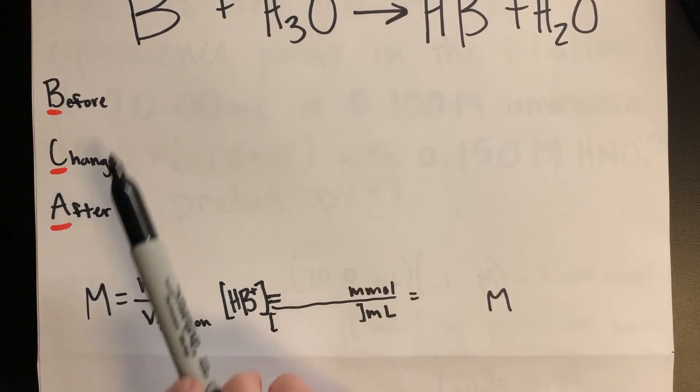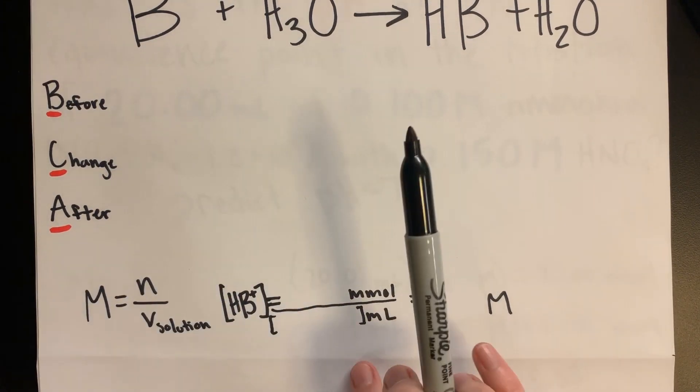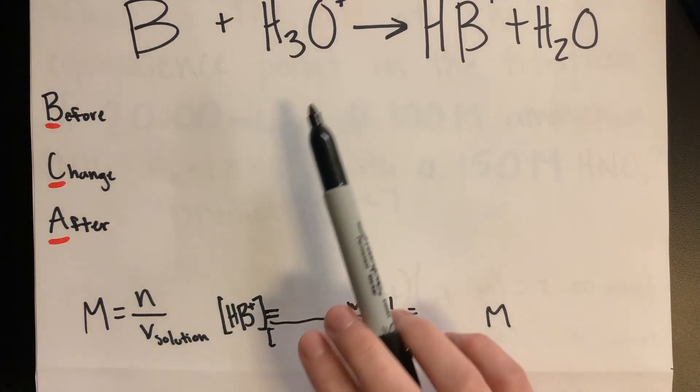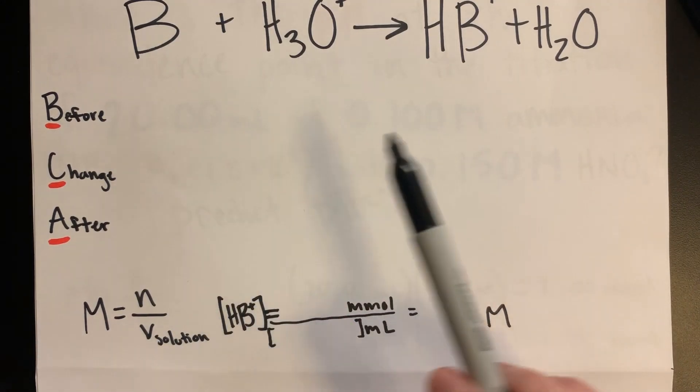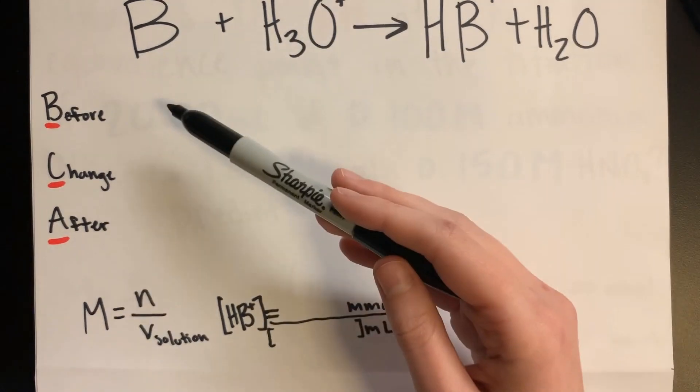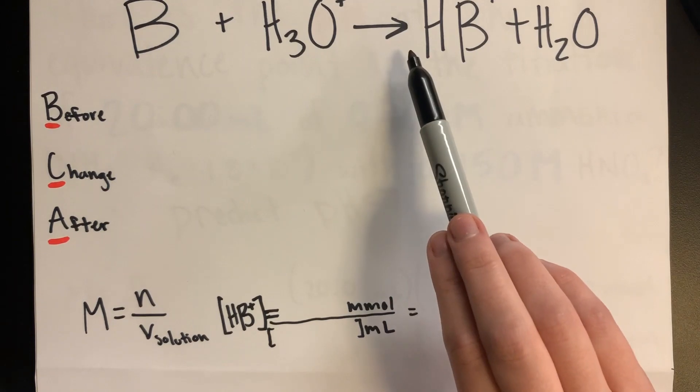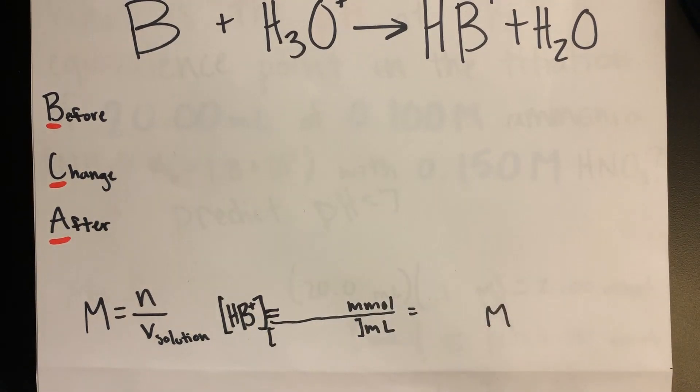In this equation, B represents the weak base of ammonia and the hydronium ion represents the nitric acid. HB plus represents the conjugate acid for the weak base. Since we are using a strong acid, it is a one-way arrow and hence we will use moles and not molarity.